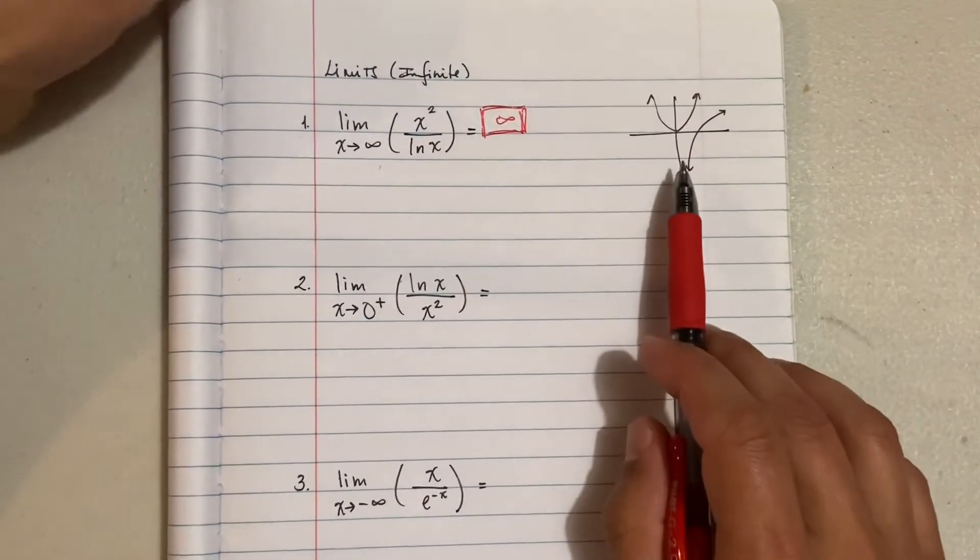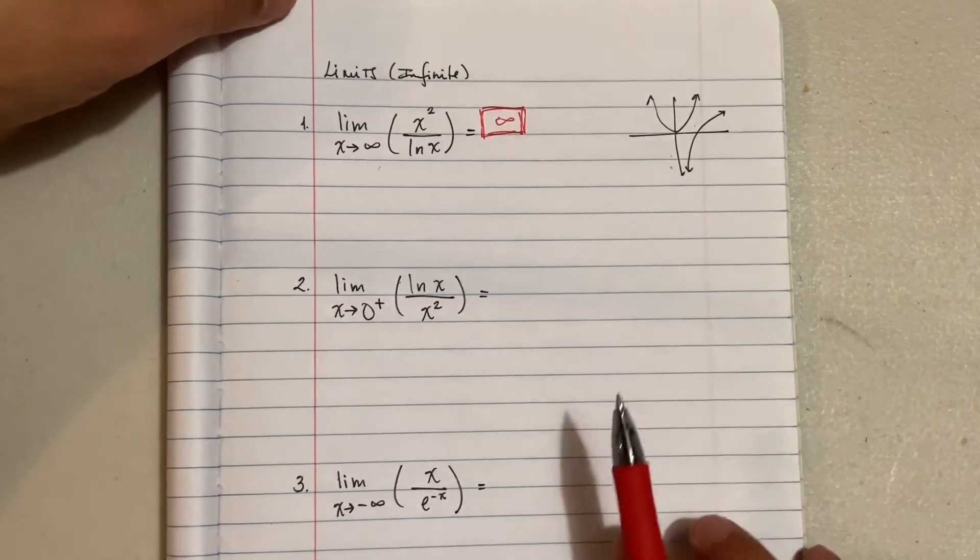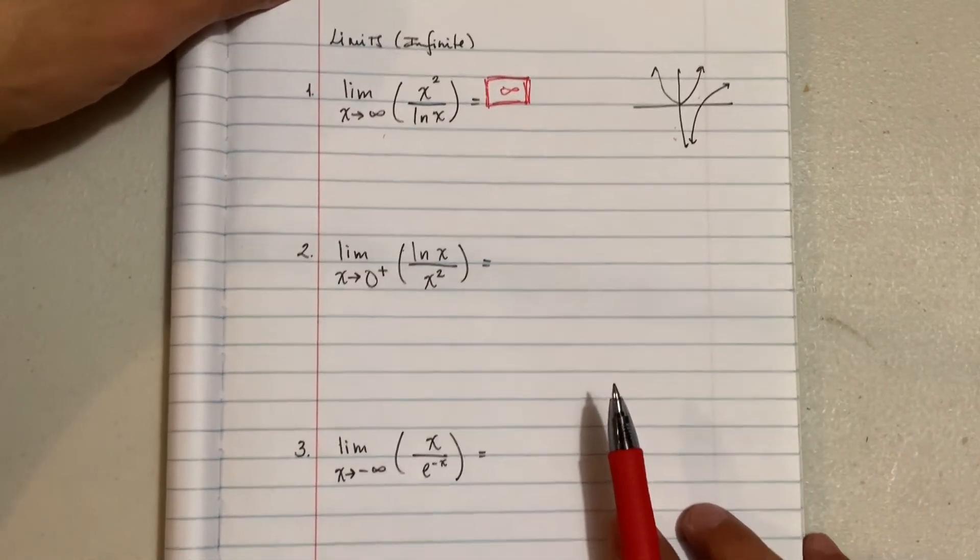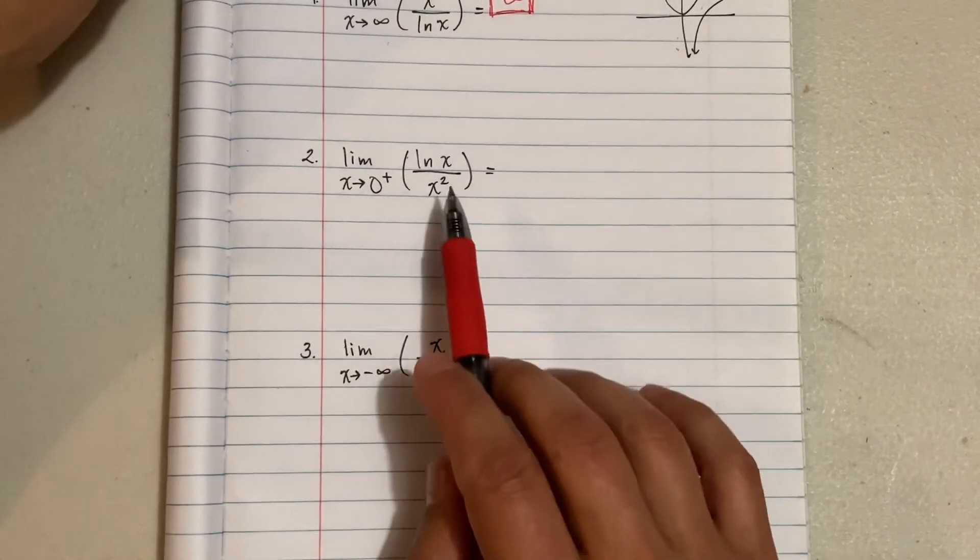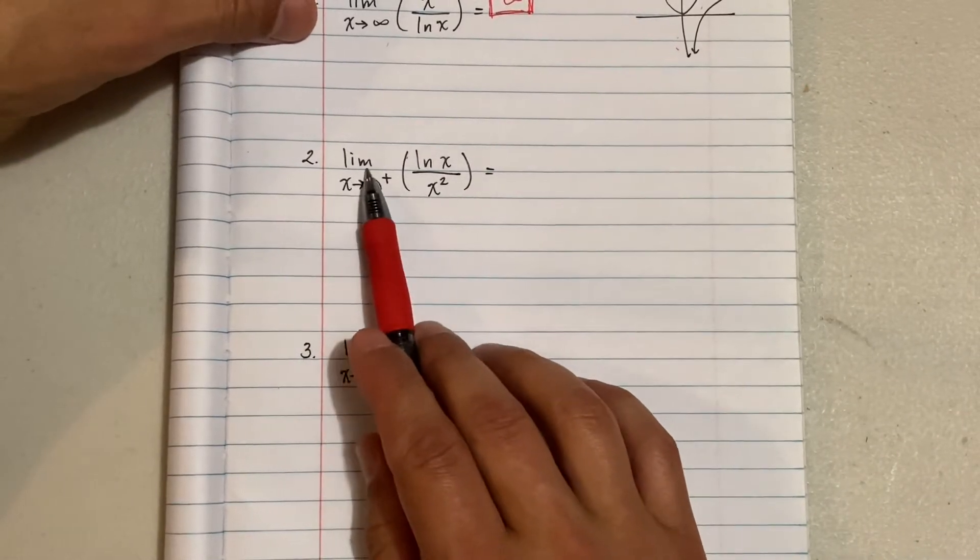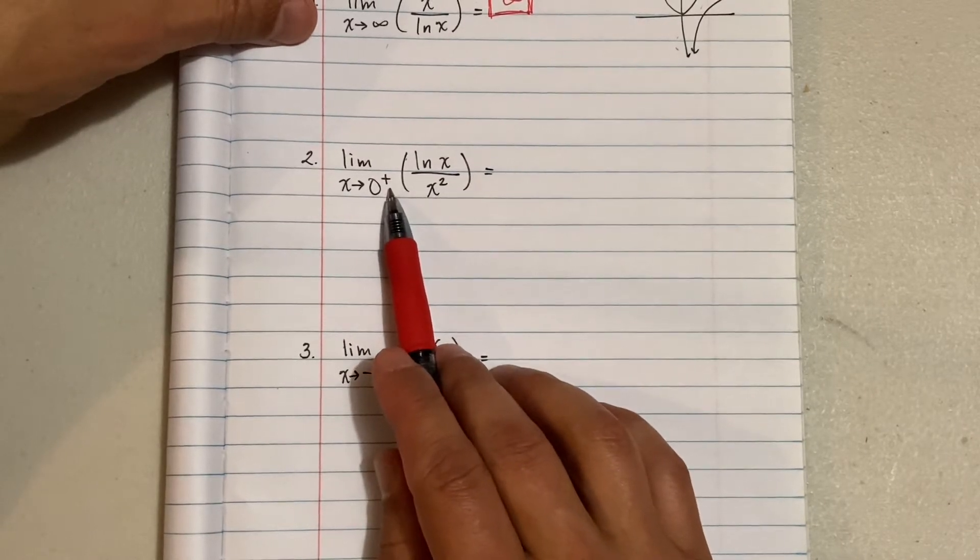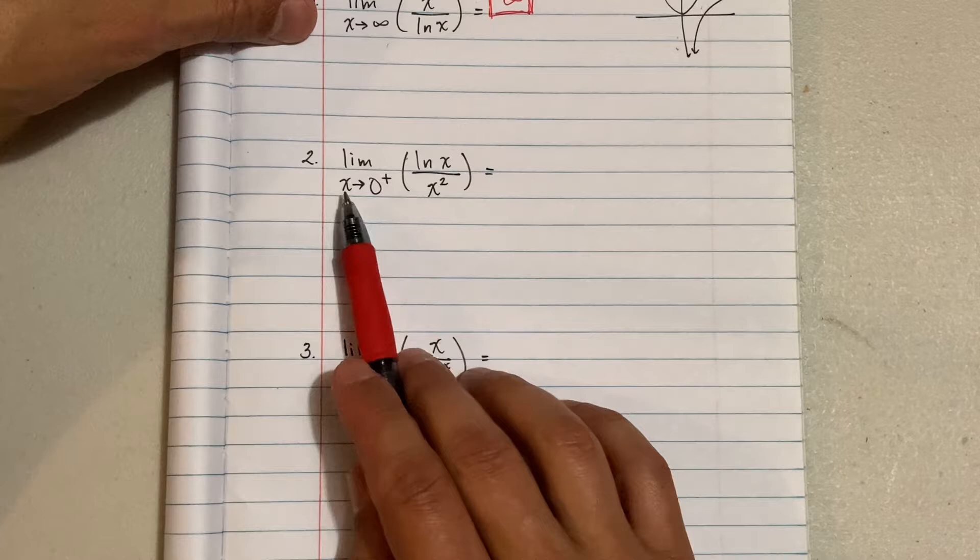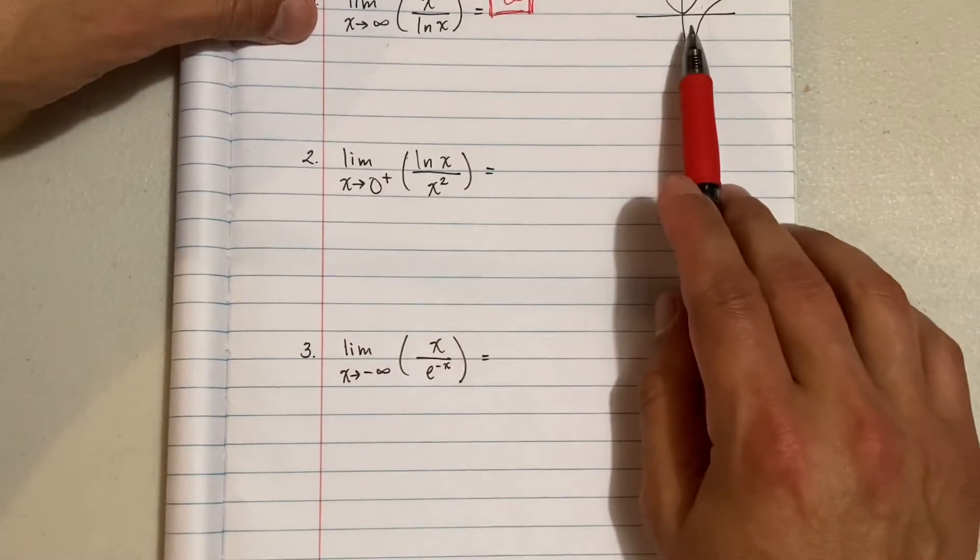So when you're doing these, it's very good and very important to understand what it looks like. So that one wasn't too hard, but let's see if we can do one that's a little bit more complex here. Let's look at number two. Now they switched it up on us and it's the limit as x approaches zero from the right side. Be careful with the notation.